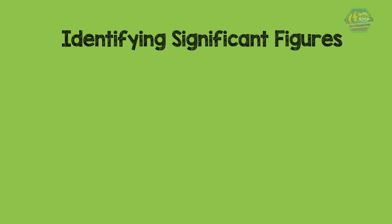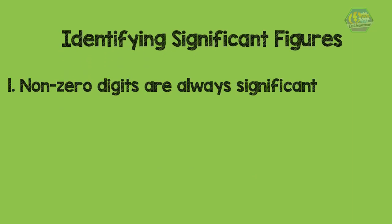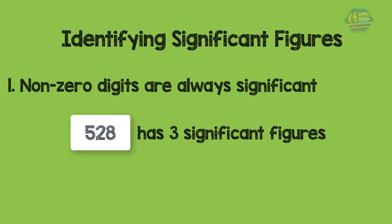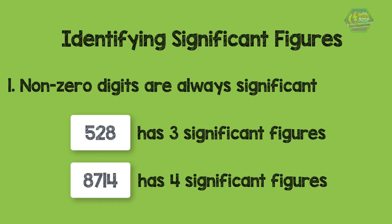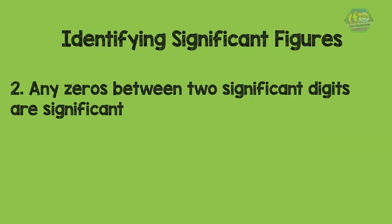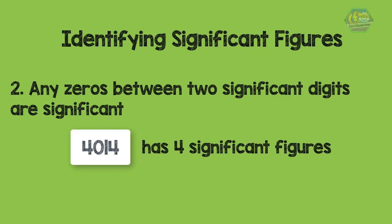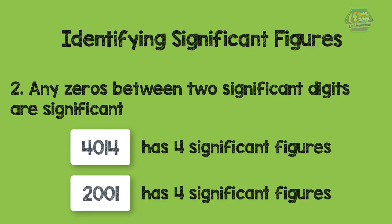Now there are several rules in identifying significant figures. First rule: non-zero digits are always significant. For example, 528 has three significant figures and 8714 has four significant figures. Second rule: any zeros between two significant digits are significant. For example, 4014 has four significant figures and 2001 has four significant figures.